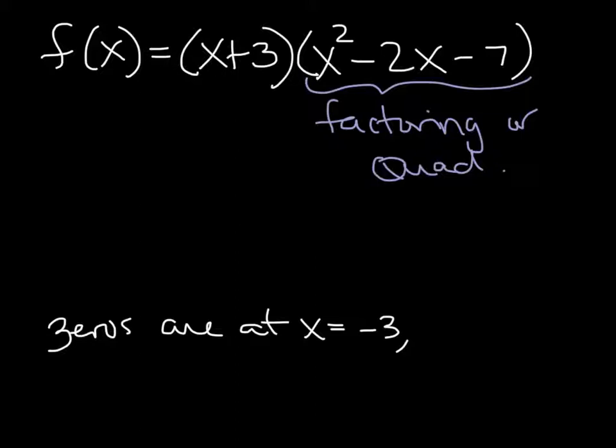So if I try to factor x squared minus 2x minus 7, it's not going to work. If you do do the quadratic formula on just that part, we already know the x plus 3 how to solve that one. So if I do the quadratic formula on this one, I already did it, and if you try it, you end up getting x equals 1 plus or minus 2 radical 2. That's all done, and that's all simplified. So you can go and test that on your own.